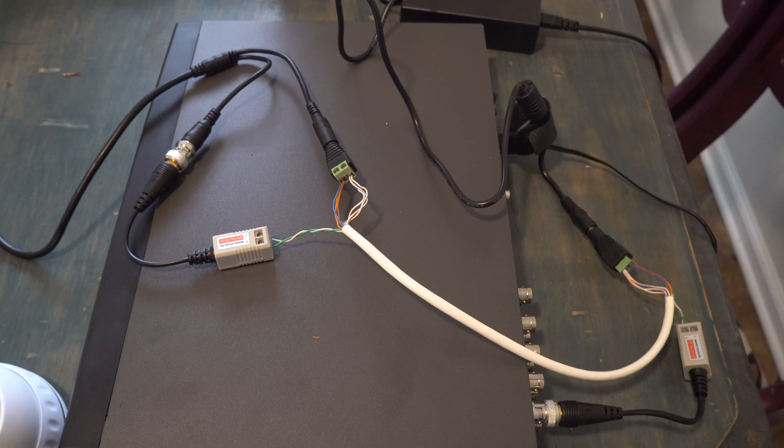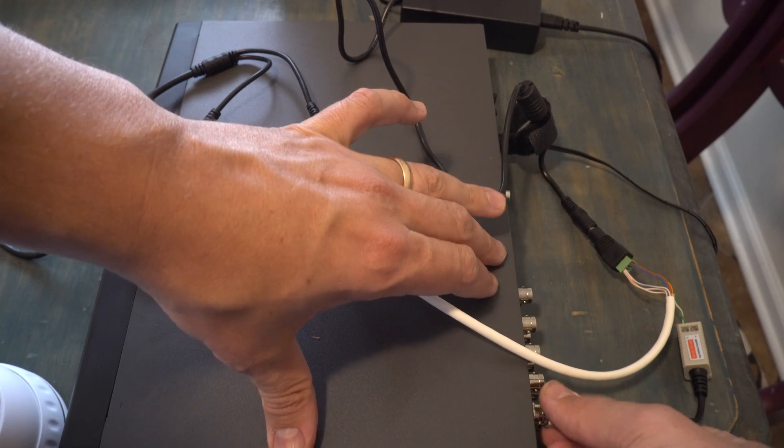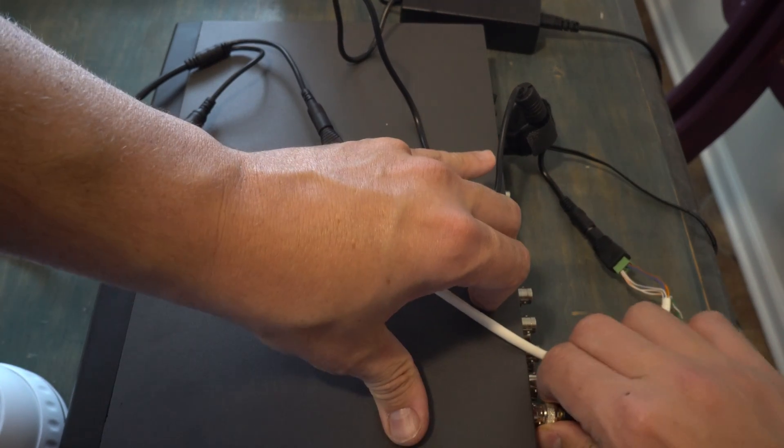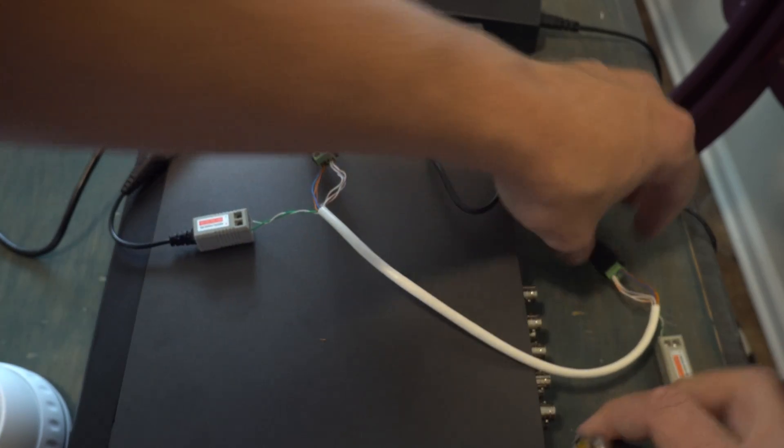What a typical install looks like when you're using balun adapters with Ethernet. You have the BNC adapter that plugs into the MDR.